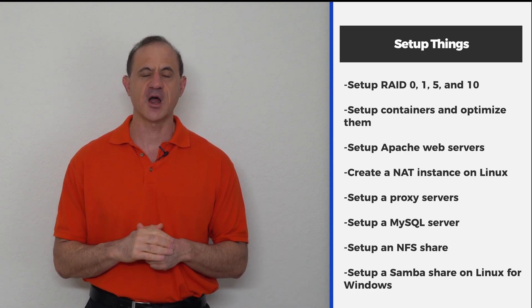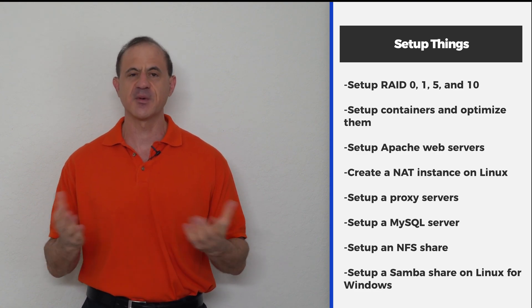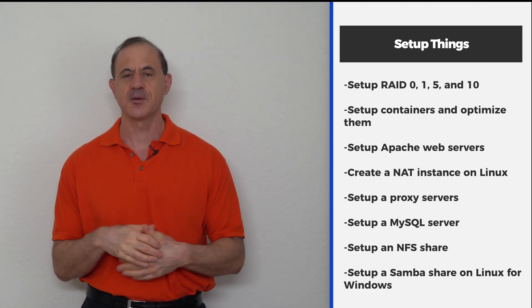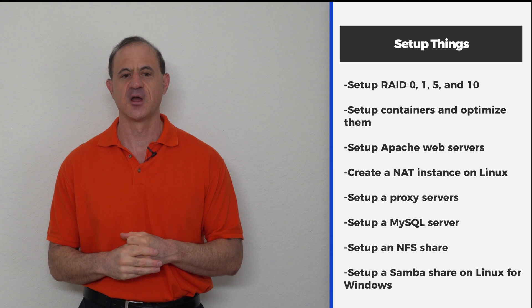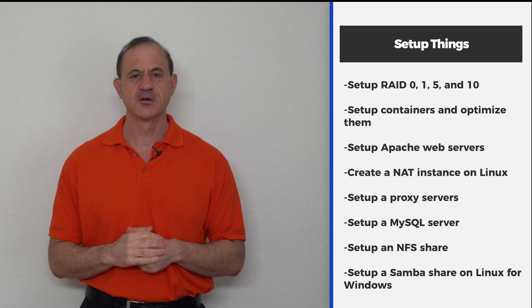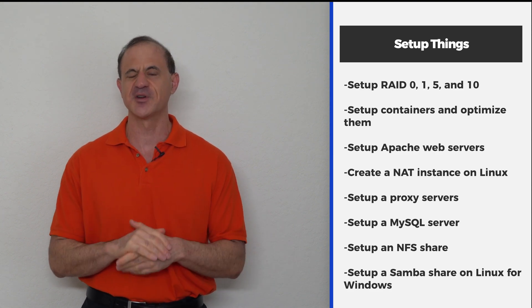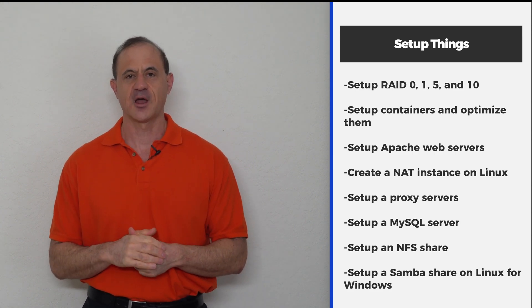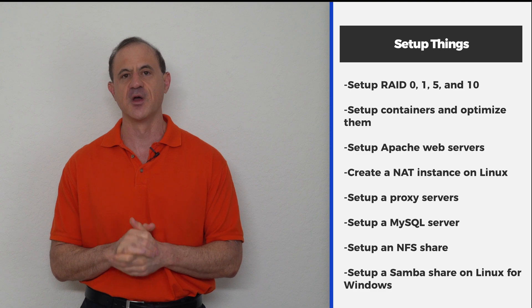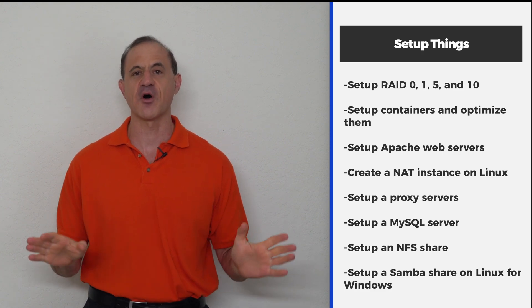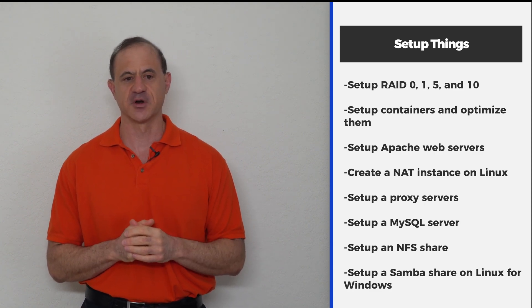Now on your server, I want you to set up some containers. Learn how to manipulate containers, optimize them, and build a bunch of containers. And then when you're done that, set up an Apache web server and play with the features and functionality of the Apache web server. And then when you're done that, create the equivalent of a NAT instance. Do it on a Linux machine or a Linux virtual machine. It's not that hard to do, but now you'll learn about NAT. And when you're learning about NAT, you'll be able to see the address things change, especially if you want to use something like a sniffer or a TCP dump, which can actually show you what's going on with all the packets on your network. So now you're going to get real understanding of how a NAT instance works.